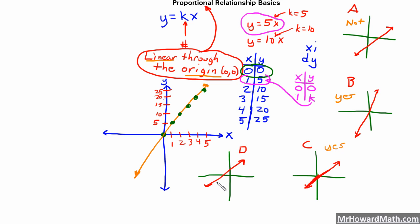D. It is a line, so that's a check, but it does not go through the origin, so it is not proportional.